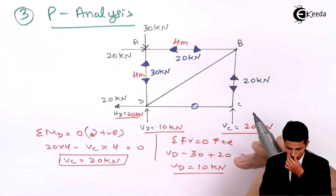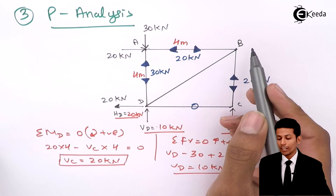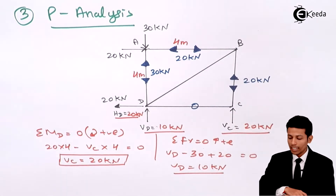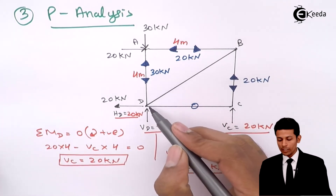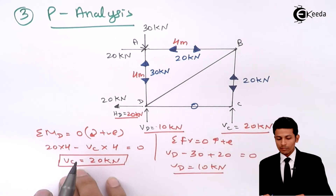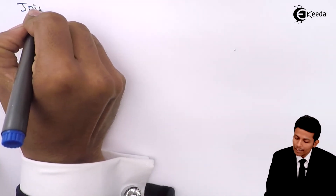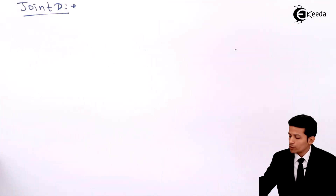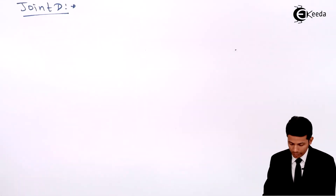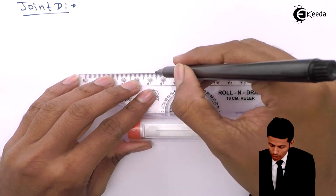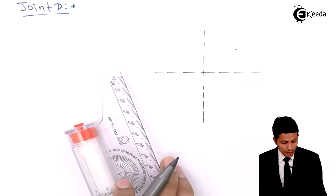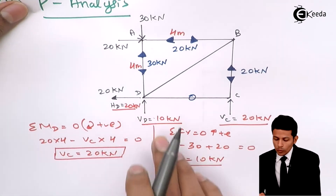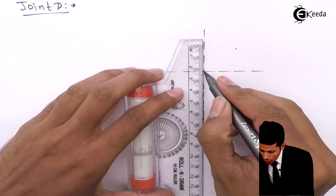For the diagonal member DB, we cannot assign it directly since 10 kN acts upward and 20 kN acts outward at D. So we apply the conditions of equilibrium to joint D. Draw the free body diagram of joint D showing the 20 kN horizontal, 10 kN vertical reaction, and the 30 kN load.